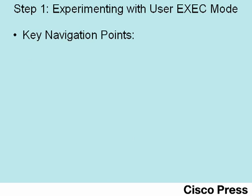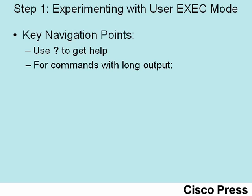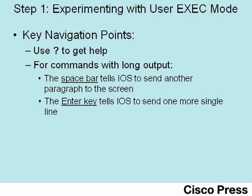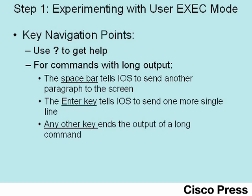Before we see the command line interface, a couple of key points to take note of. Any time you need to get help, simply type the question mark, and the router will give you some output that gives you hints about what to do next. Also, you have some commands that have a lot of output — so much output it doesn't fit on one page. When that happens, the router will put the word 'more' at the bottom of the text, and if you hit the space bar, iOS will give you several more lines, or if you hit the enter key, it'll give you one more line. Additionally, when you're tired of seeing the output of a particular command, if you press any key other than the enter key or space bar, iOS terminates the command.